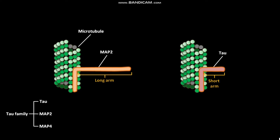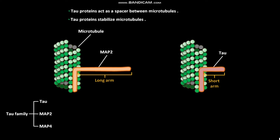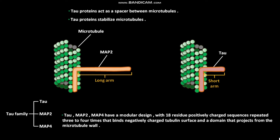Tau proteins act as a spacer between microtubules and stabilize microtubules. Tau, MAP2, and MAP4 have a modular design with 18-residue positively charged sequences repeated 3 to 4 times that bind to the negatively charged tubulin surface, and a domain that projects from the microtubule wall.